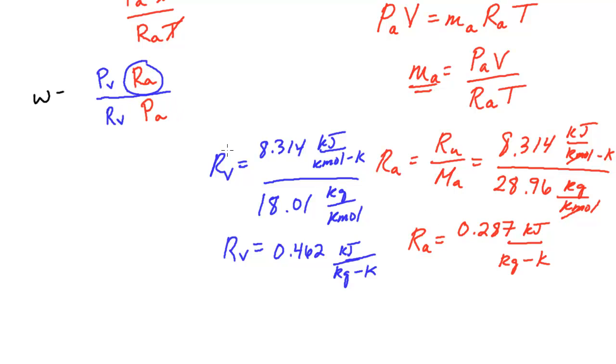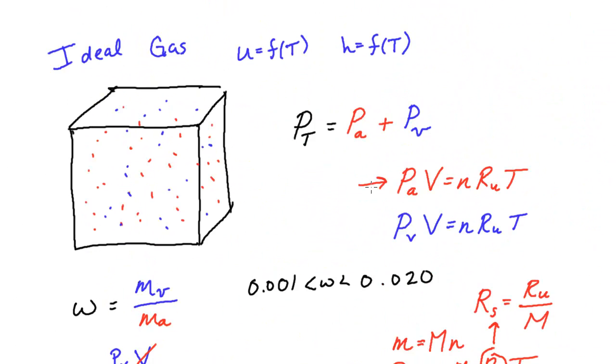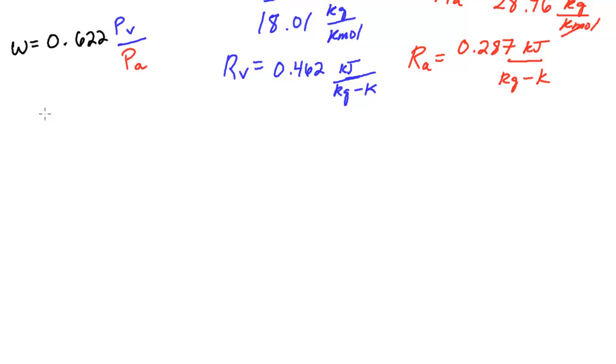So now we have these two values and we can actually do this division. And so if you actually take that 0.287 and divide it by 0.462, you will get something that is close to 0.622. And we still have the partial pressure of the vapor on the top of this fraction divided by the partial pressure of the dry air. In some textbooks now you'll see we already knew from earlier that the total pressure was dry air plus the vapor pressure. We know if we move this to the other side of the equation, we have total pressure minus vapor.